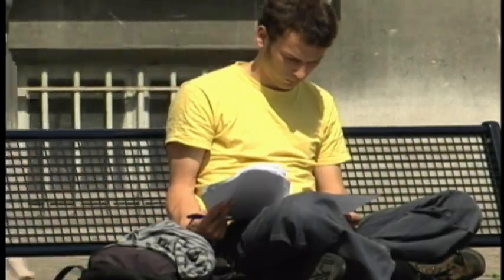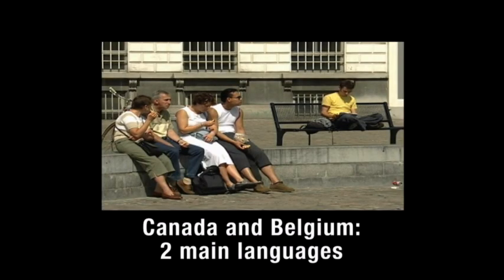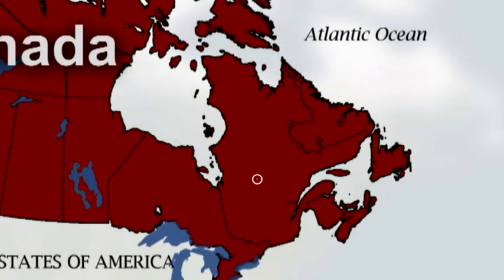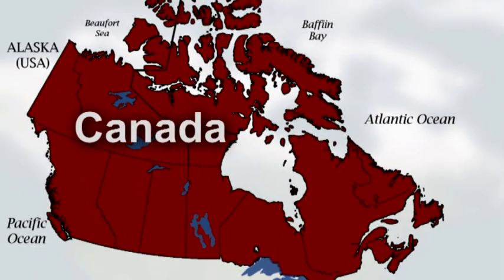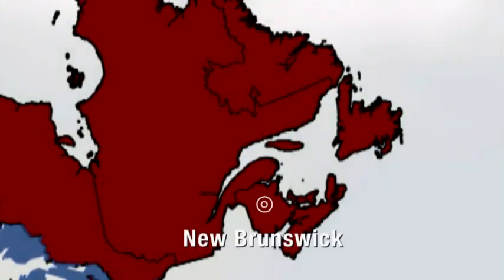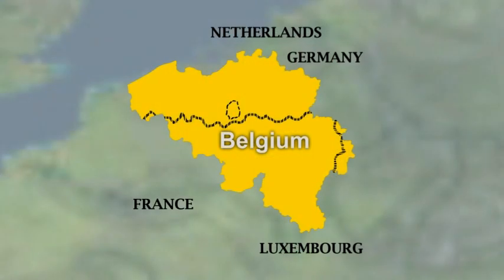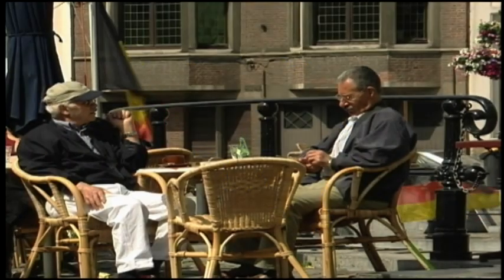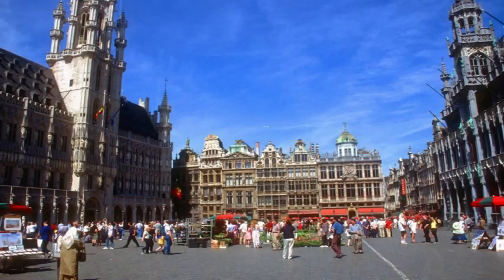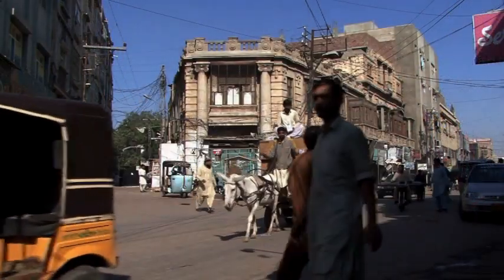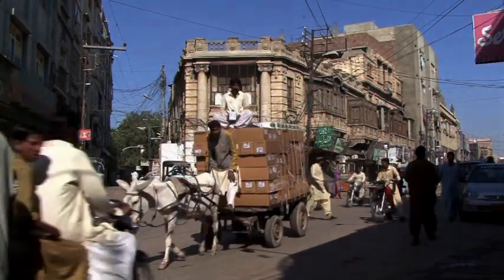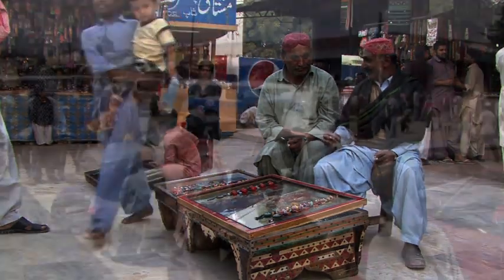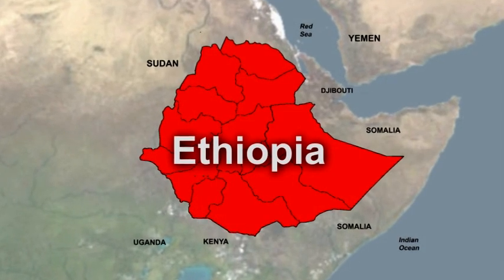Canada and Belgium each have two main language groups. In Canada, one province — Quebec — is officially French, while eight others are English, and one is officially bilingual. Belgium is divided into a French-speaking and Flemish-speaking region, and a bilingual capital region, Brussels. In Pakistan, Sindh province has adopted Sindhi as an official language. Ethiopia decided to organize its federal system on language and ethnic lines.